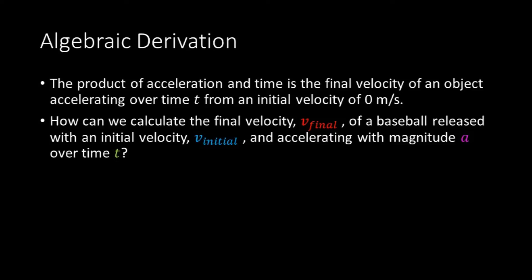So, how can we calculate the final velocity, v_final, of the baseball released with an initial velocity, v_initial, and accelerating with a magnitude a over time t?